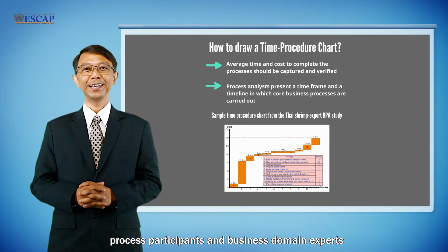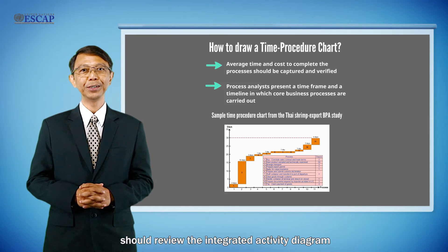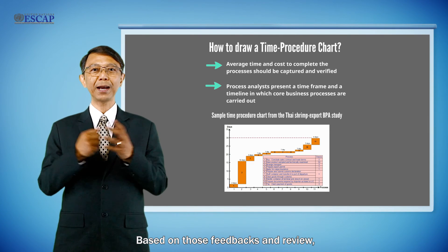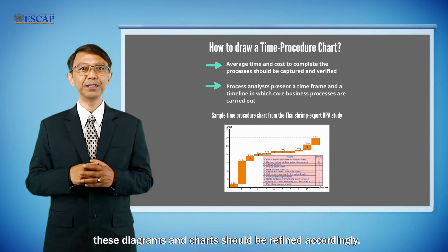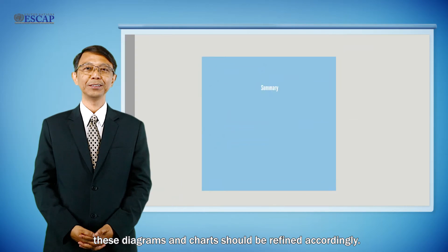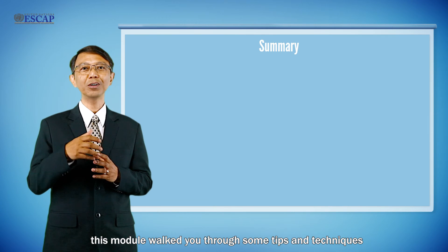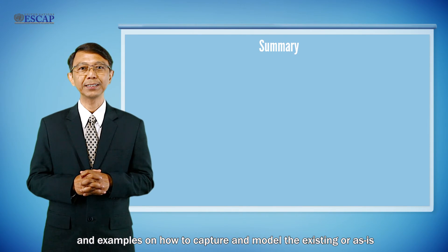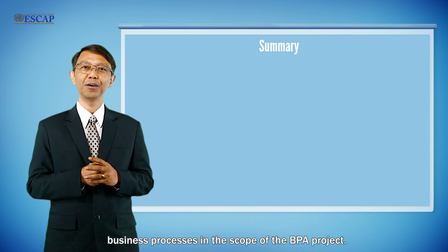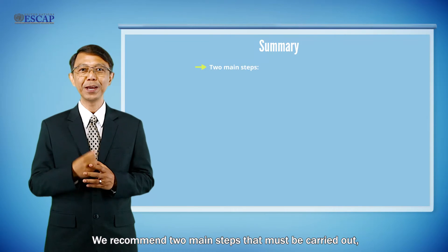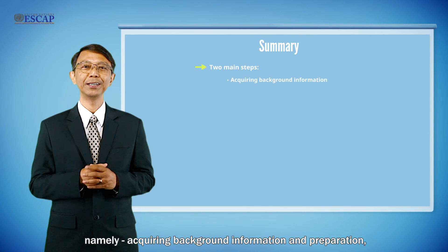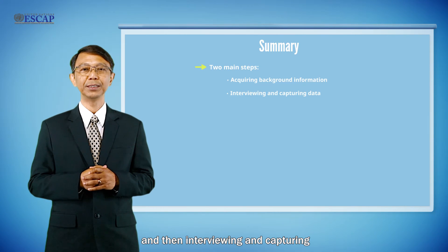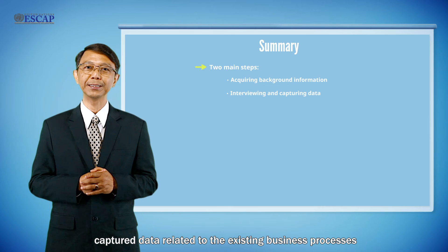Process participants and business domain experts should review the integrated activity diagram and the time procedure chart and then provide their feedback. Based on those feedbacks, these diagrams and charts should be refined accordingly. In summary, this module walks you through tips, techniques, and examples on how to capture and model the existing or as-is business processes in the scope of the BPA project. We recommend two main steps: acquiring background information and preparation, and then interviewing and capturing data related to the existing business processes.